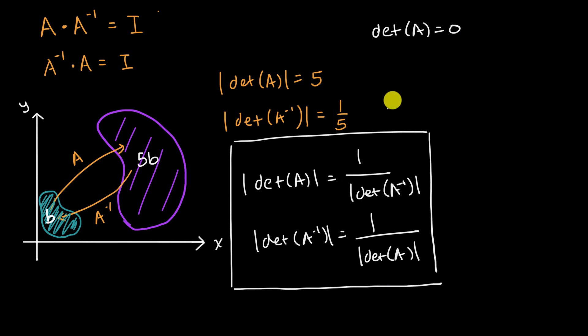Well, it can't, because if this quantity right over here is zero or this quantity right over here is zero, that would mean that the absolute value of the determinant of the inverse of the matrix needs to be one over zero, which is undefined. And so we have an interesting conclusion here. If the determinant of a matrix is equal to zero, there is not going to be an inverse.